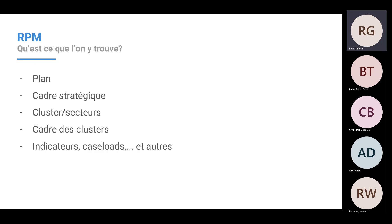Dans RPM on retrouve le plan pour le pays et pour l'année en cours, le cadre stratégique avec les objectifs et les indicateurs, la liste des clusters et des secteurs actifs dans le pays, les cadres sectoriels avec les indicateurs et les cibles, et toute la partie monitoring et suivi de la réponse.